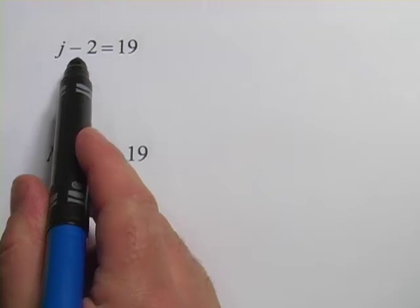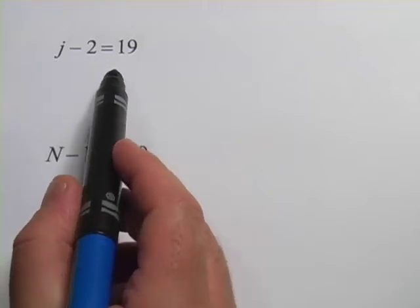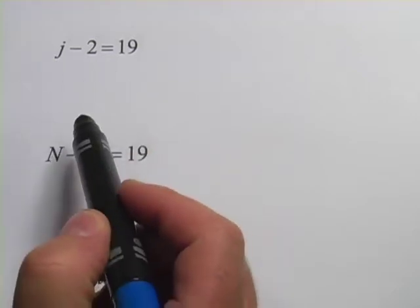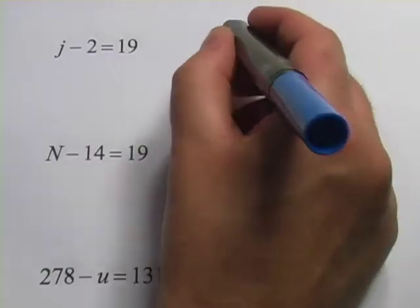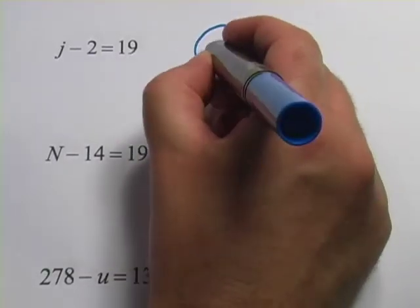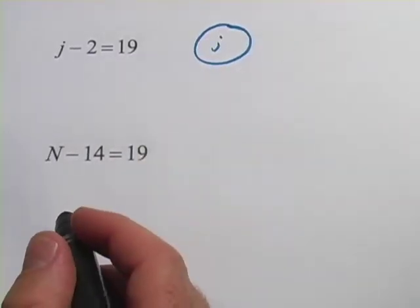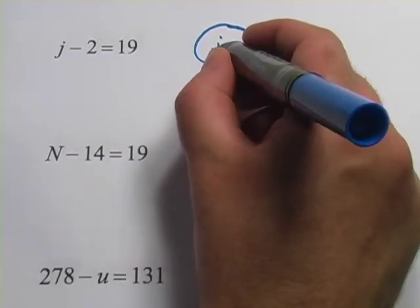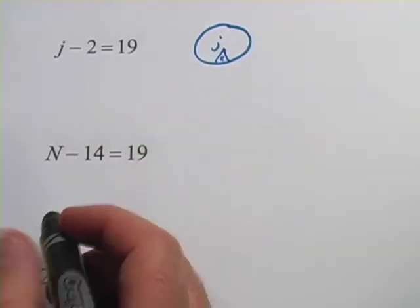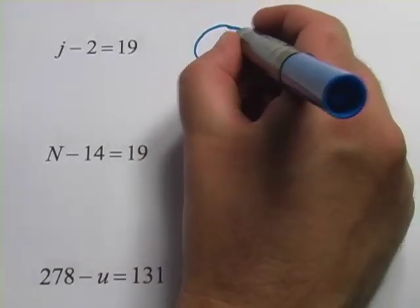The first one says j minus 2 equals 19. Now if we want to just visualize this, we start with j, a whole big thing that's j. If we take away 2, so some little sliver of that is 2, what's left is 19.